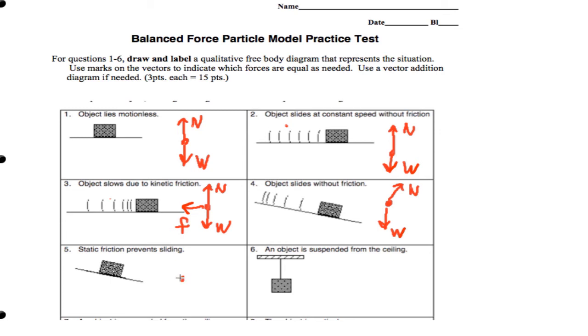Here, we have a very similar free-body diagram, a normal force, and a downward force of gravity, or weight. And we have friction opposing the sliding down.